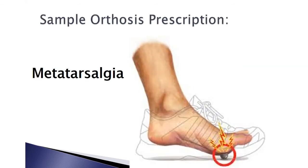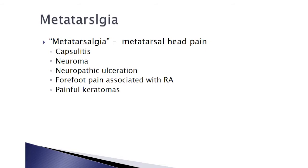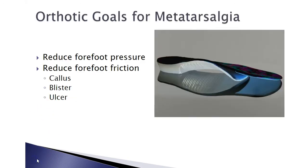That's the idea of tissue stress. Now let's take an example with metatarsalgia, which can mean a number of different things: it could be capsulitis, neuroma, neuropathic ulceration, forefoot pain associated with RA, or painful keratomas — many things can cause pain under the ball of the foot. Our orthotic goals for treating pain under the ball of the foot really come down to two things depending on what's going on. Regardless, we want to decrease pressure. That's the first tenet: identify what force is causing the problem — in this case, pressure. But there are some causes of pain under the ball of the foot that also have a friction component, including callus, blister, and ulceration.